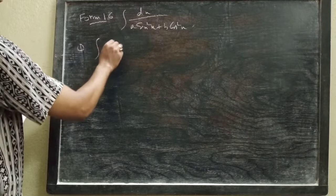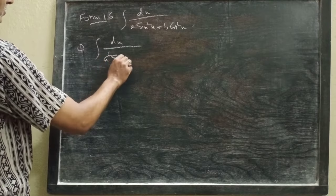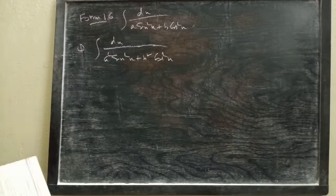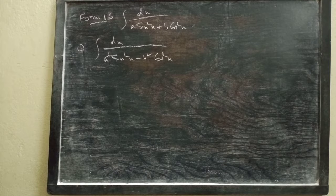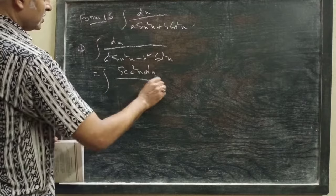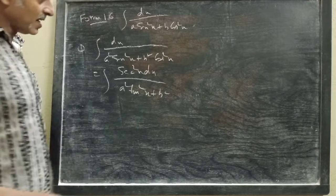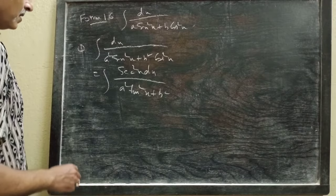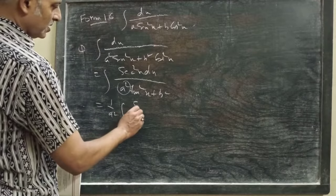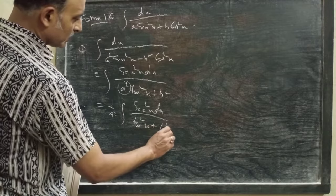The first problem is integration of dx by a²·sin²x + b²·cos²x. What we have to do first is multiply both numerator and denominator by sec²x. Here it becomes a²·tan²x + b². You should know that when sin²x is multiplied by sec²x it simplifies accordingly. Now I count this as 1 by a² times sec²x dx by tan²x + b²/a².